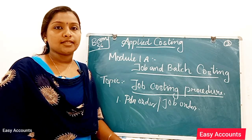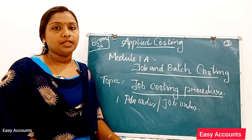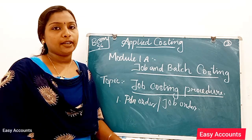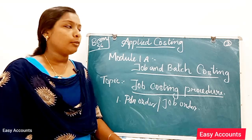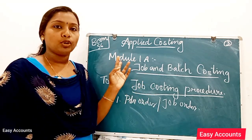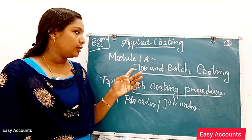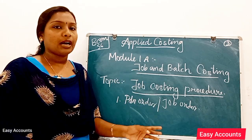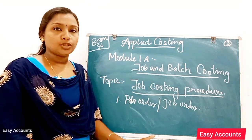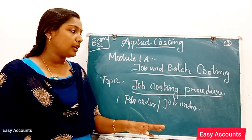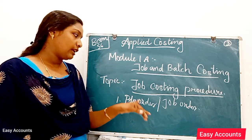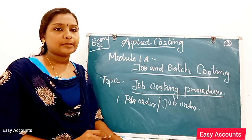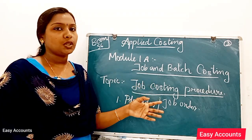Hello everyone, welcome to AC Accounts. Welcome to Applied Costing in the 6th semester. The first module is Module 1A, which is called Job and Batch Costing — Part 1 and Part 2. The topic is called Job Costing: Procedure and Steps. Let's look at the steps and the procedure.